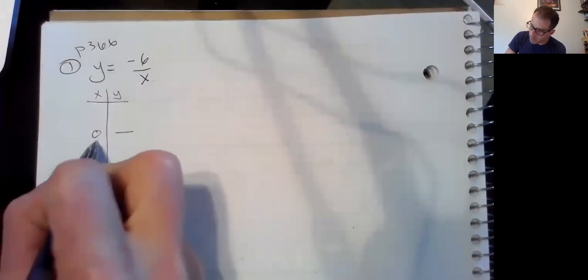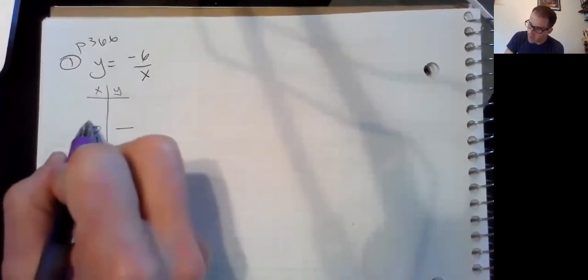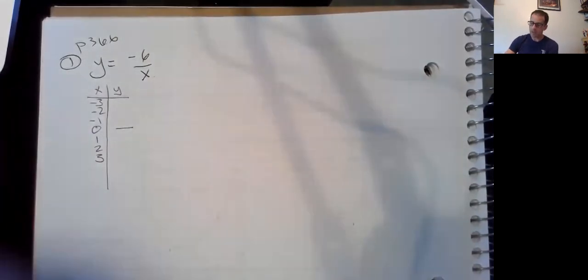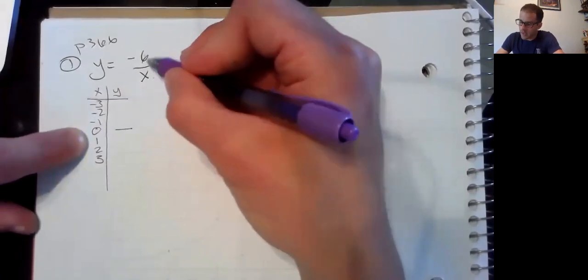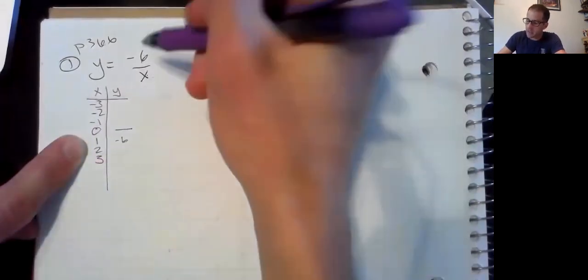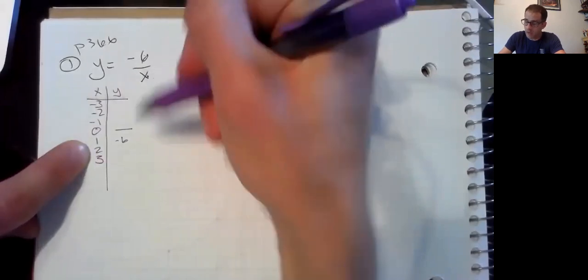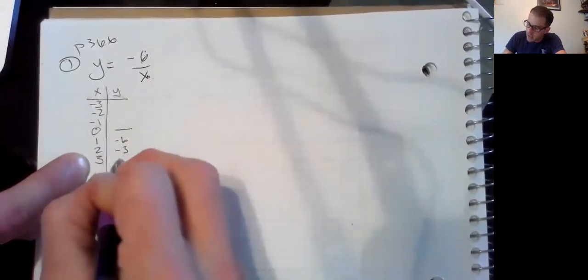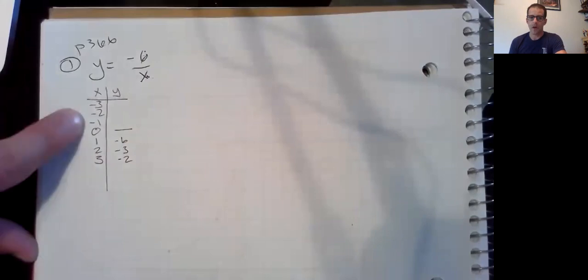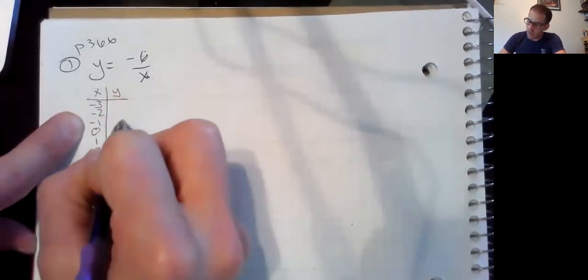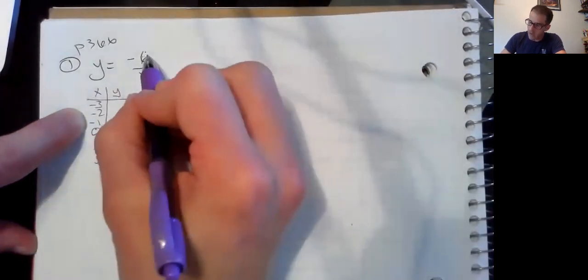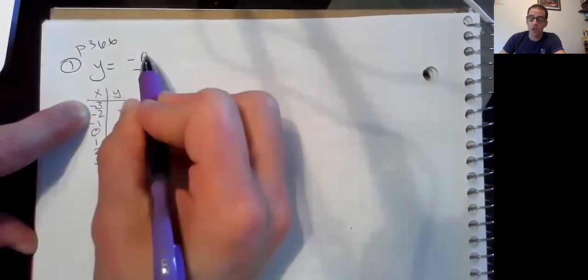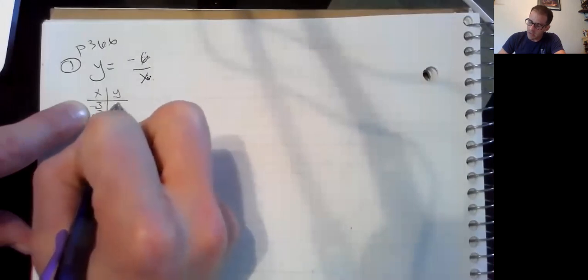All right, now I need to write three numbers that are bigger than zero and three numbers that are smaller than zero. And I'm going to start plugging in one. Negative six divided by one is negative six. Negative six divided by two, you can write it over here if you need to, negative three. Negative six divided by three is negative two. Up here, negative six divided by negative one is positive six. Negative six divided by negative two is positive three. And negative six divided by negative three is positive two.